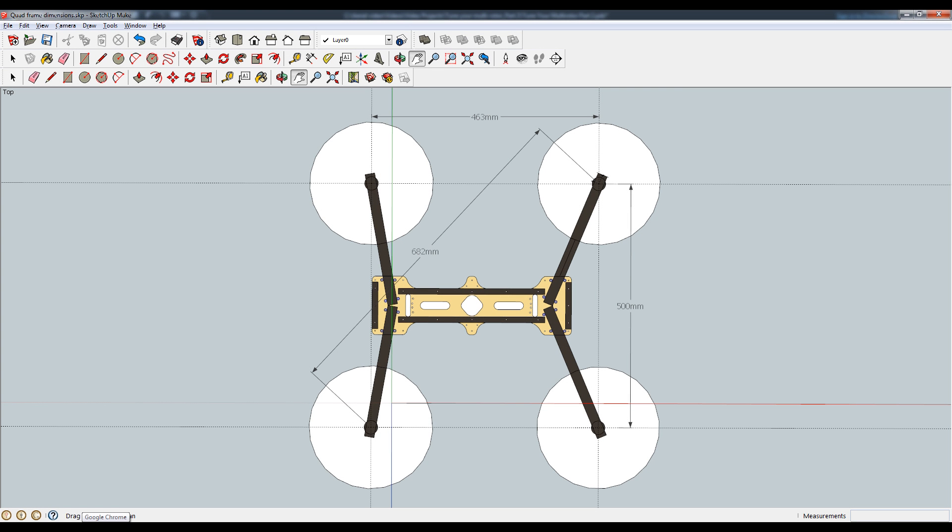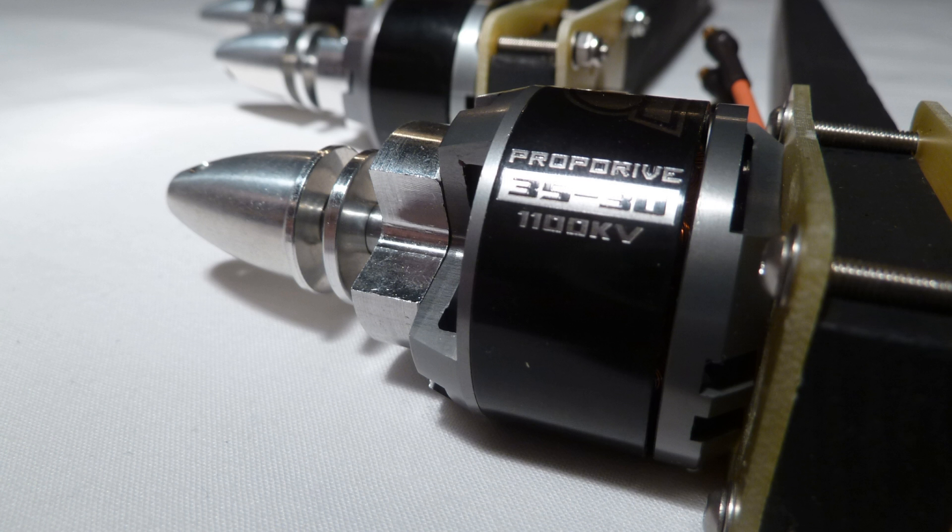First an overview of the Ycopter quad. Its size is around 500mm square or 680mm diagonal from motor shaft to motor shaft. The motors are 3530 NTM 1100KV.